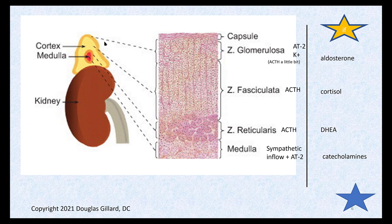Looking at a picture: there's the adrenal gland sitting on top of the kidney. The adrenal cortex is the outer part. The orange layer is the zona glomerulosa, yellow is the zona fasciculata, and the inner orange layer is the zona reticularis. This is all the adrenal cortex, with a capsule around the outside. The medulla secretes mainly epinephrine, some norepinephrine, and a little dopamine.